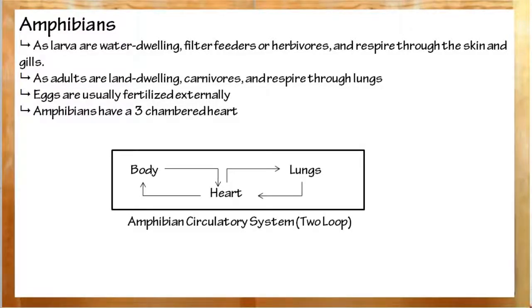Adults are generally land-dwelling, carnivorous, and they use their lungs to breathe. Amphibians have developed a three-chambered heart, as well as a double-loop closed circulatory system. Closed meaning that blood does not leave the circulatory system.